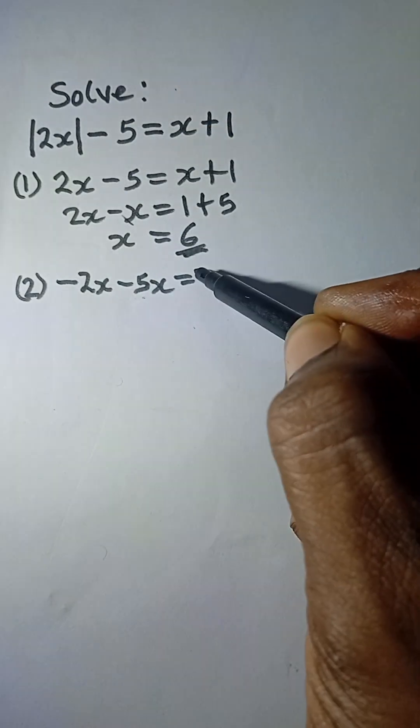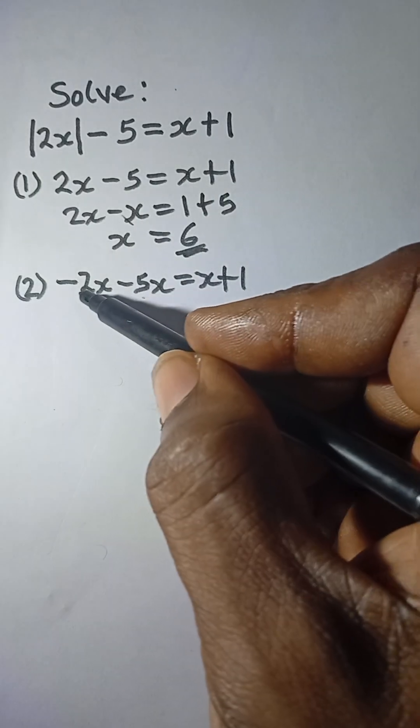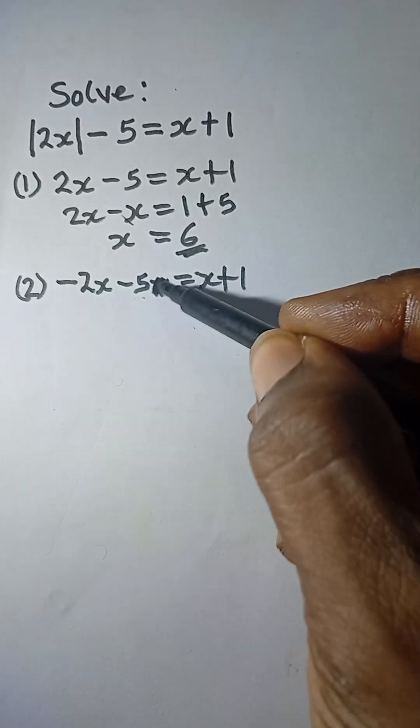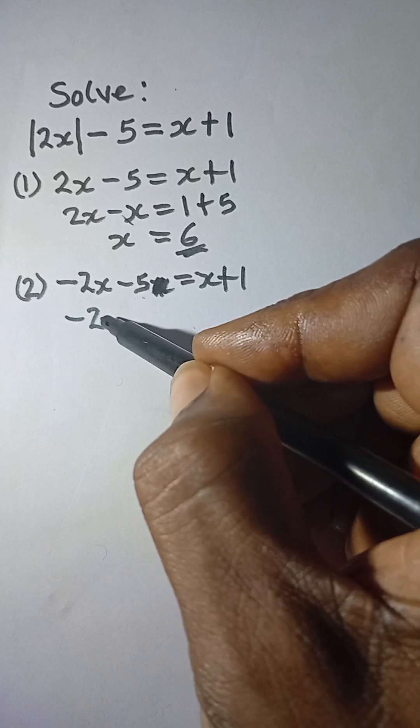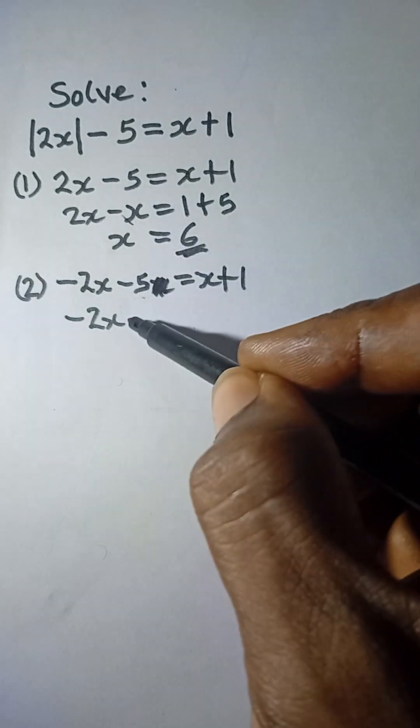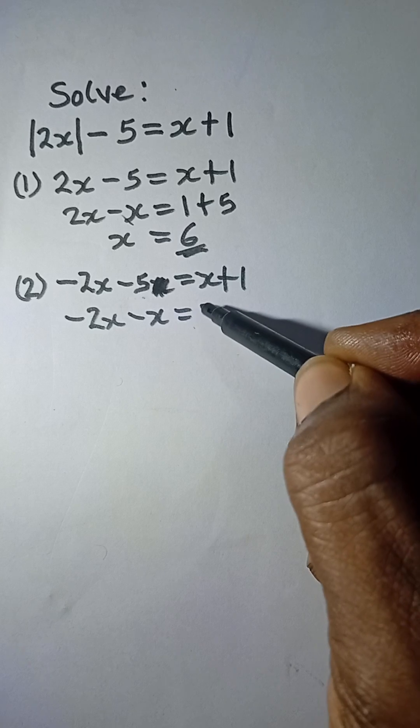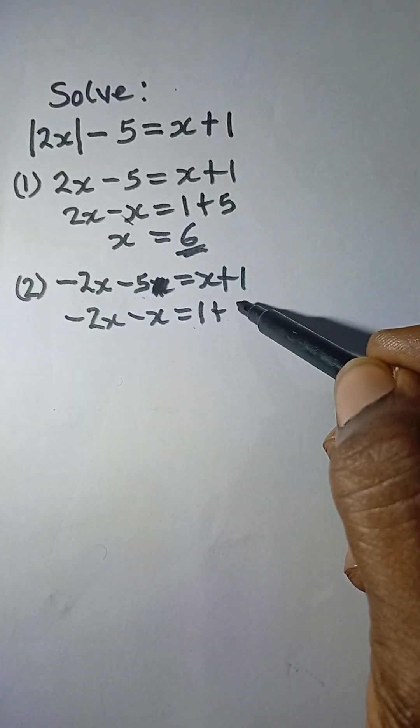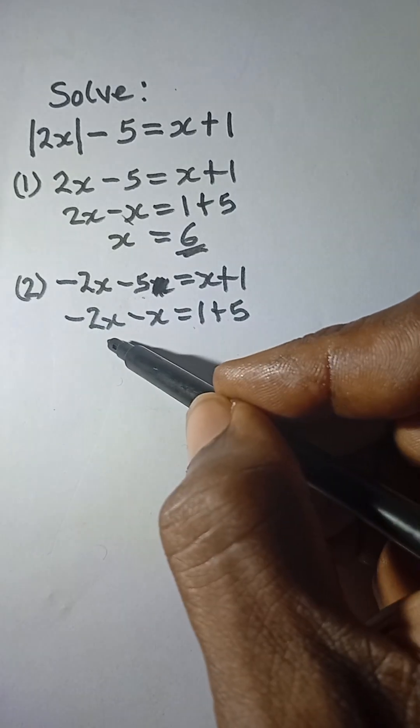is equal to x plus 1. So sorry, there is no x here. What you have here is we can take this minus 2x. When this comes to the left it becomes minus x, is equal to 1. Minus 5 comes to the left, it becomes plus 5. So we have minus 2x minus x, which is minus 3x, is equal to 6.